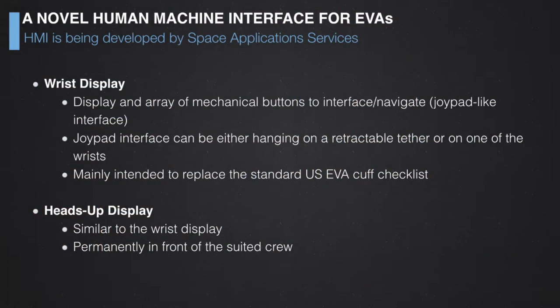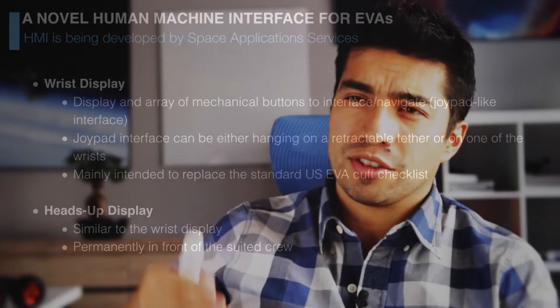The second configuration is the wrist display — a screen on the astronaut's wrist controlled with an array of mechanical push buttons, because a touchscreen with small buttons is too difficult to operate with gloves. The third option is the heads-up display, permanently positioned in front of the astronaut showing information at all times, functionally similar to the wrist display but different in location. We are comparing these three setups to determine which is best for developing the real spacesuit information system.